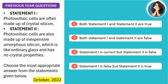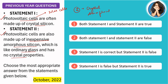The next question is about photovoltaic cells, which are solar cells. The question states that solar cells are often made of crystalline silicon. Solar cells are made of two types of silicon: one is crystalline silicon, and one is amorphous silicon. The first statement about crystalline silicon is correct. The second statement says photovoltaic cells are also made of inexpensive amorphous silicon, which is like ordinary glass and has no crystal properties. Both statements one and two are true, so option number one is correct.